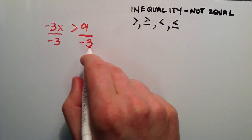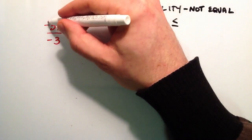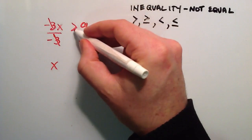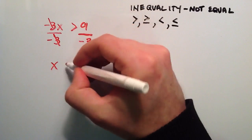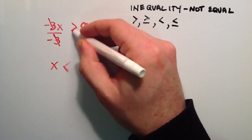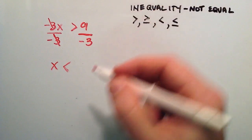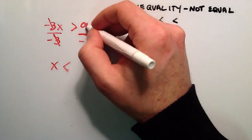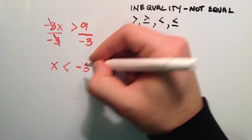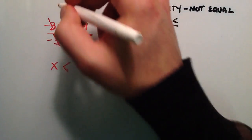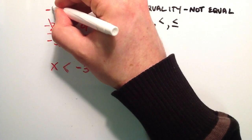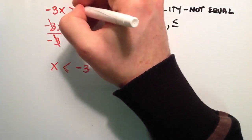Since we have to do whatever we did to the left side to the right side — negative 3 and negative 3 cancel, giving us x, and since we divided by a negative 3, we need to flip this sign the opposite direction. So the greater than sign changes to a less than sign, and 9 divided by negative 3 is negative 3. So this is our solution: negative 3x greater than 9 gives us x less than negative 3.